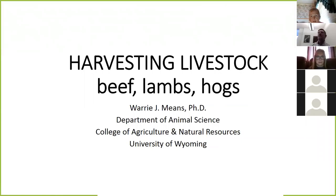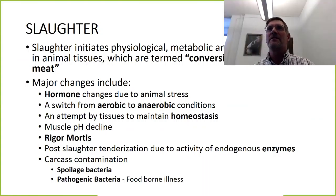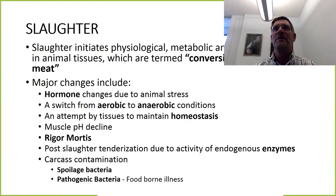Today I want to talk about harvesting livestock — beef, lambs, and hogs. Slaughter initiates physiological, metabolic, and physical changes in animal tissues. In meat science, we term these the conversion of muscle to meat.